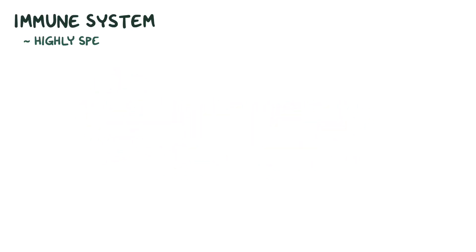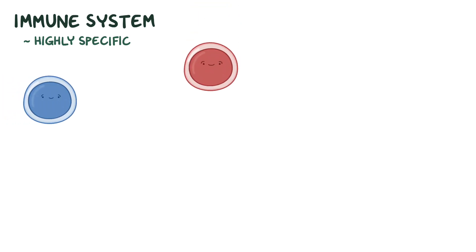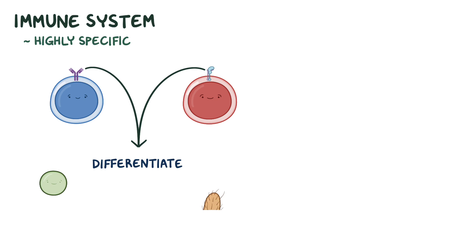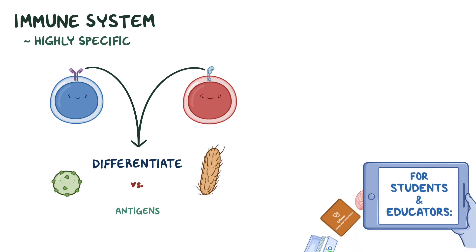The immune response is highly specific for each invader, and that's because the cells of the adaptive immune response have receptors that differentiate one pathogen from another by their unique parts, called antigens.